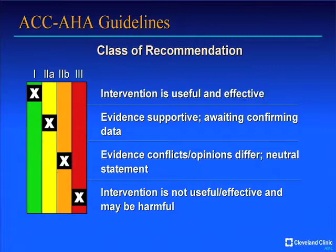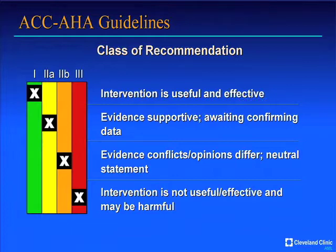I present the data and then the recommendations according to the ACC/AHA guidelines, which divide their recommendations according to Class 1, 2A, 2B, and 3. Class 1 is a strong recommendation. 2A and 2B represent lesser degrees of recommendation with less data. Class 3 is actually a contraindication. You'll also see levels of evidence — A, B, and C — based on whether there are multiple trials, a few trials, or only observational data. A Class 1 recommendation is established as useful, effective, and strongly recommended.